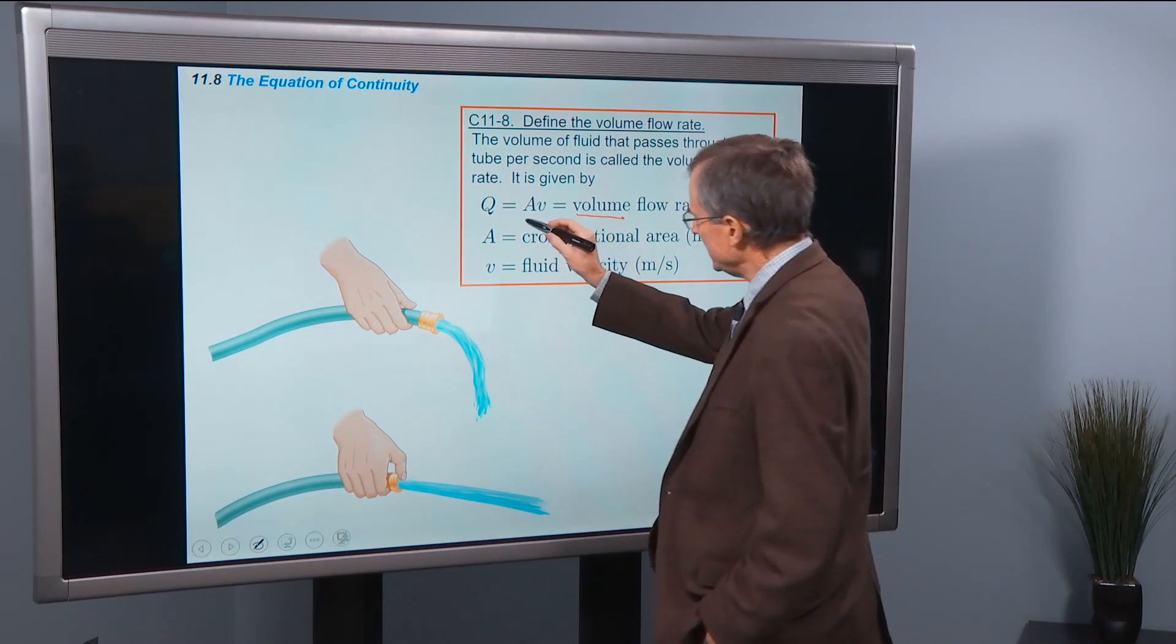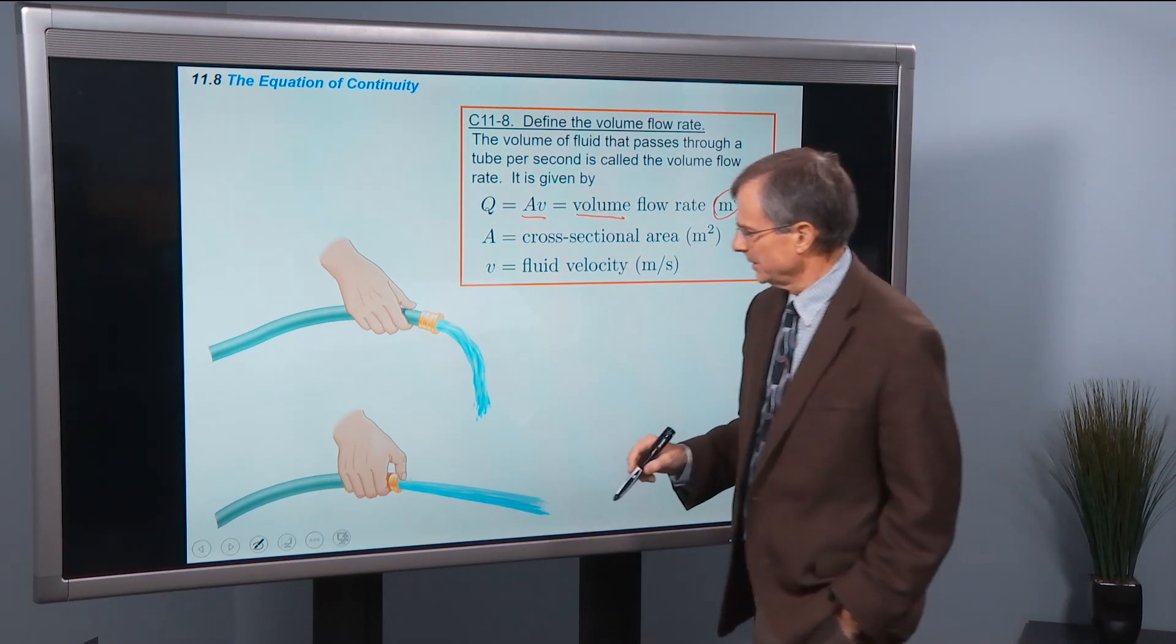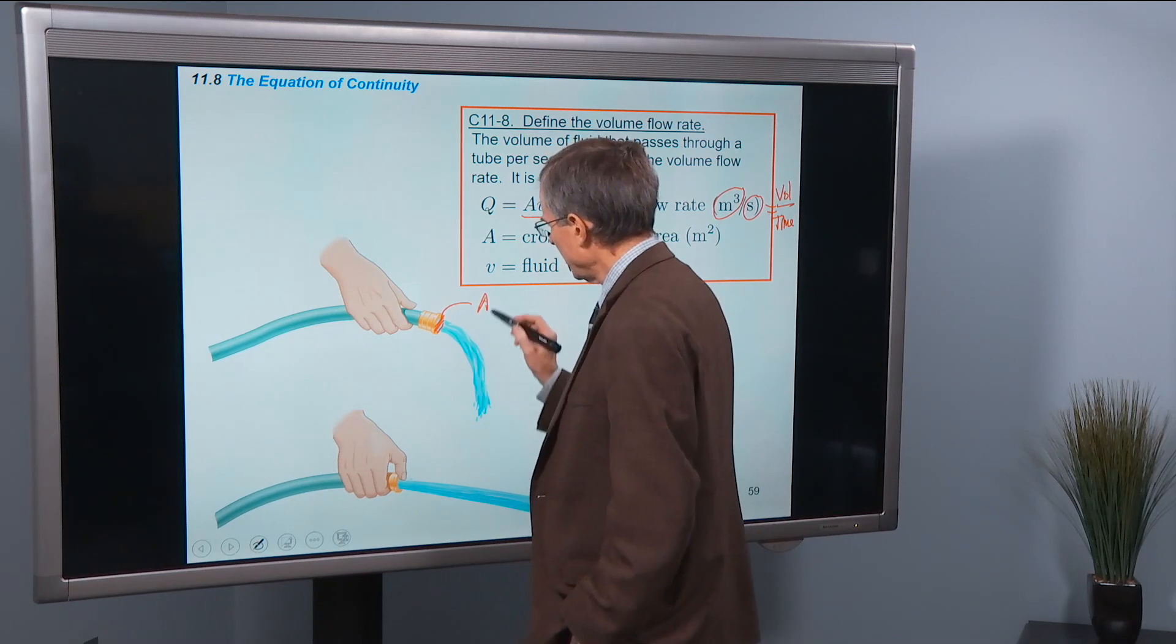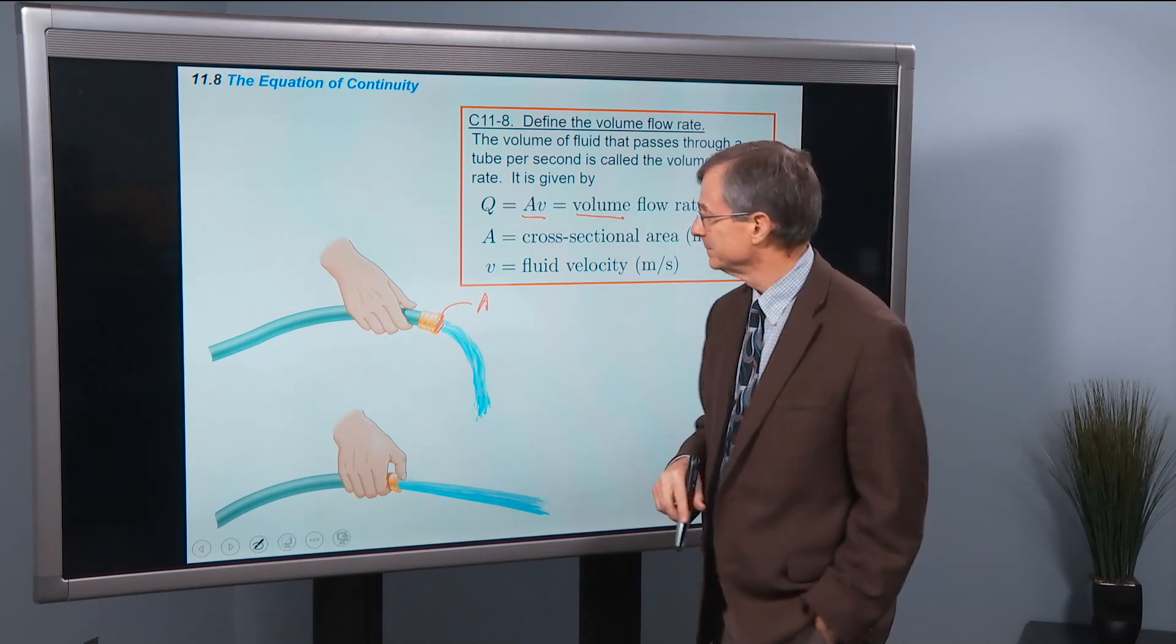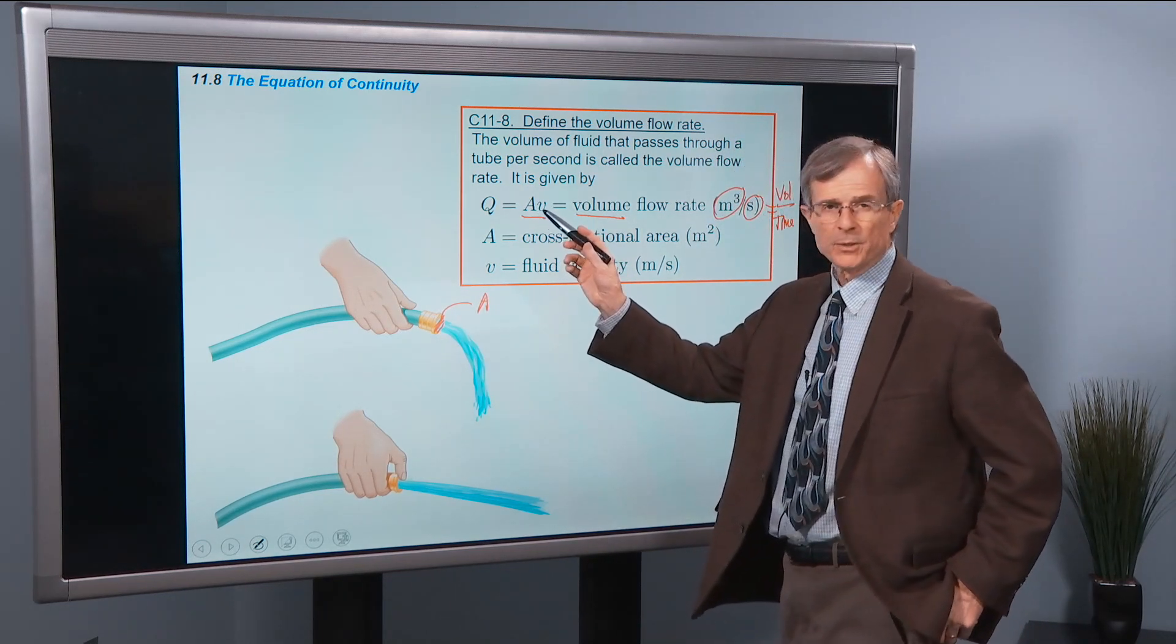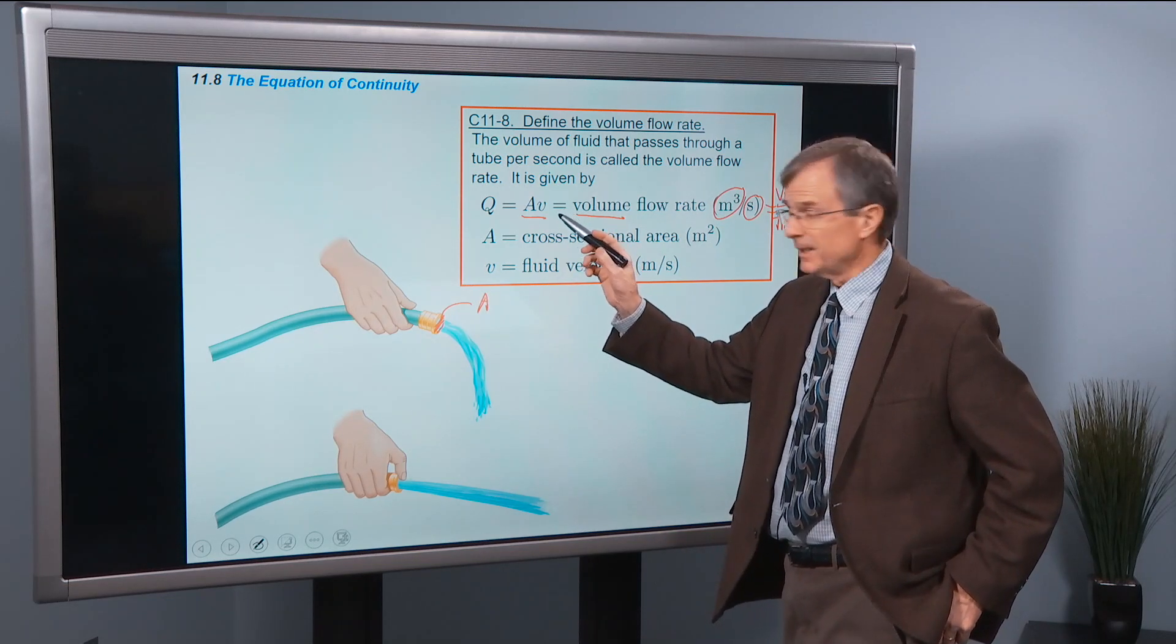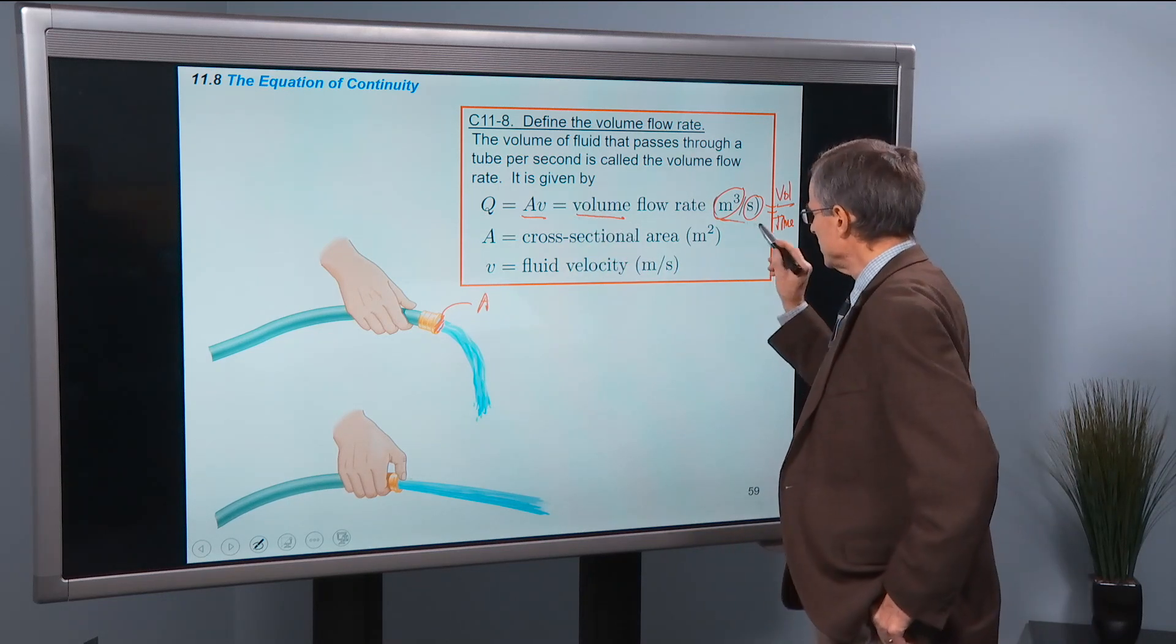And it is equal to the area, the cross-sectional area. So this would be the cross-sectional area of the tube times the velocity. And you can see that the units work out. Area is measured in meters squared. Velocity is measured in meters per second. So meters squared times meters per second is meters cubed per second. So the units all work out.